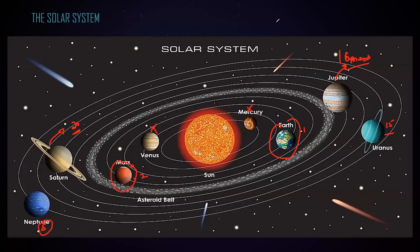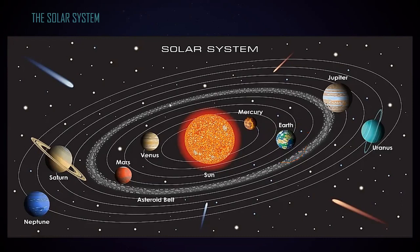Moons are objects which orbit the planet. The moon is a natural satellite — completely moving around the Earth. There are also many artificial satellites which we send from the Earth, which revolve around the Earth and are used for observation and space probing. These are the numbers of moons around each planet.